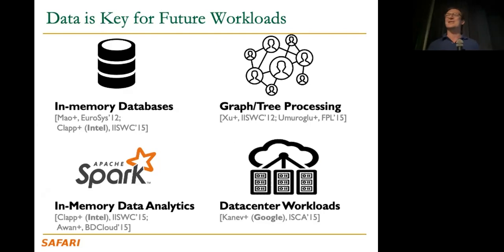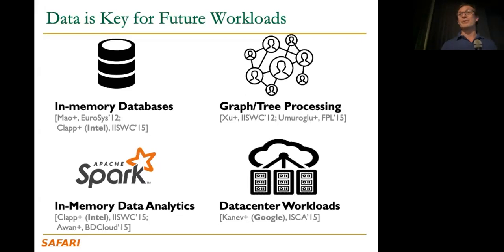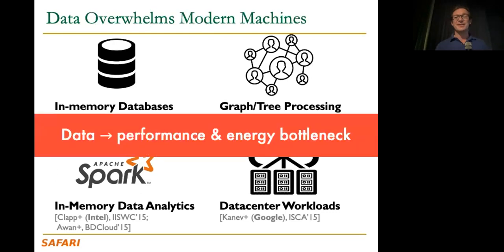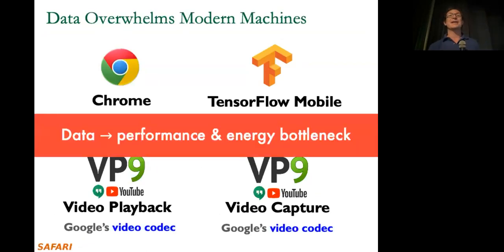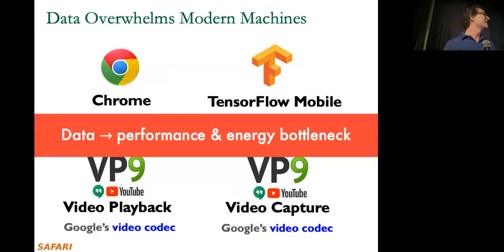Neural networks are not the only interesting workload — there are other workloads that we should not ignore, which may be even more important going into the future. Data is a performance and energy bottleneck in those workloads as well. At the mobile end there are many workloads we use where data is again a bottleneck.